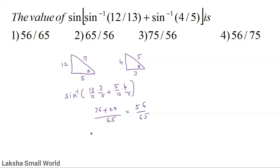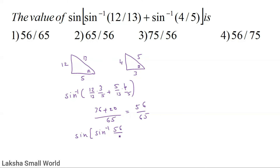So the result is 56/65. Therefore sin⁻¹(56/65). The value is 56/65, and option 1 is the correct option.